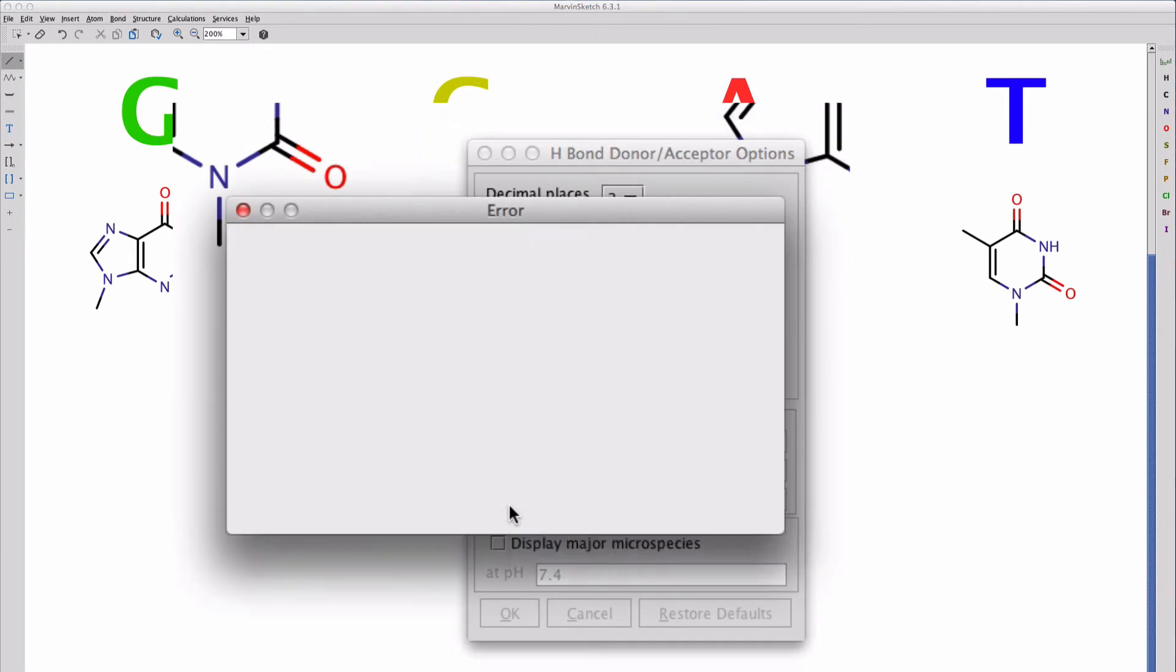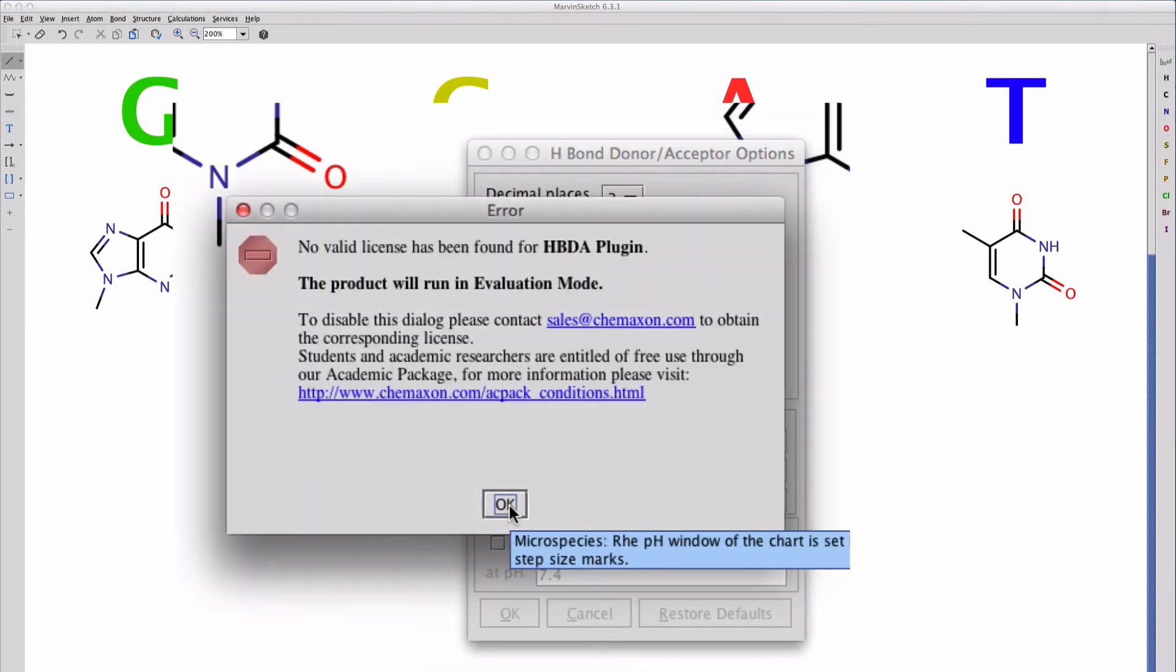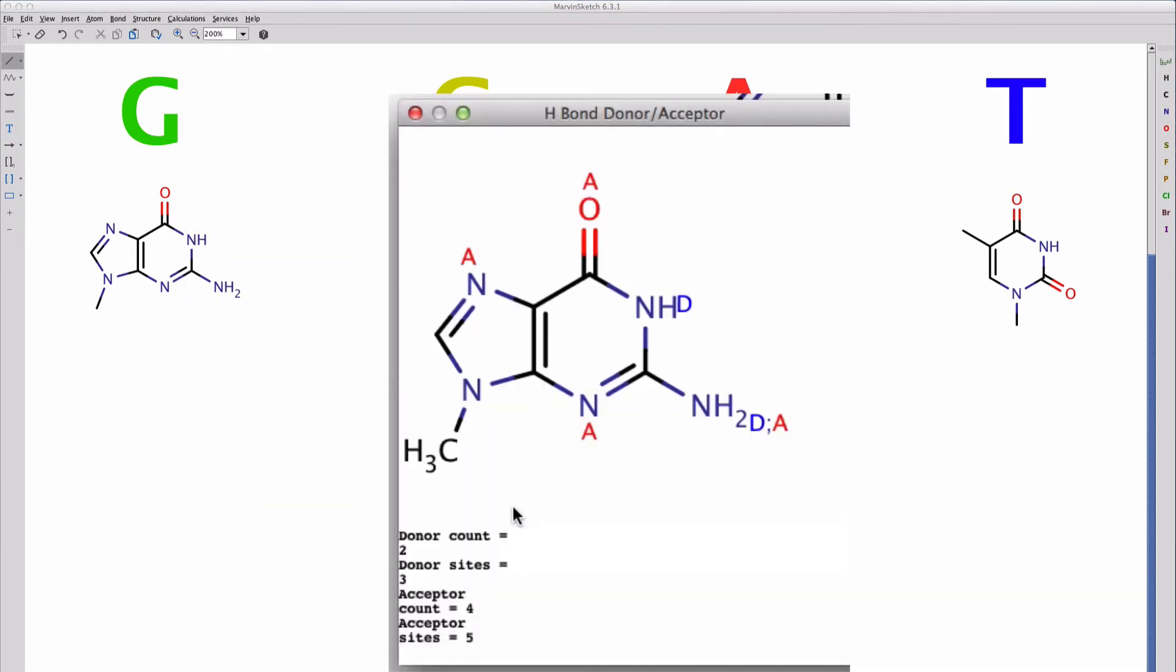Just ignore the Evaluation mode. There's guanine, and the hydrogen bond donors and acceptors are indicated with A and D. You can see that this particular amino group is both a hydrogen bond donor, because it has two hydrogen atoms, and a hydrogen bond acceptor.